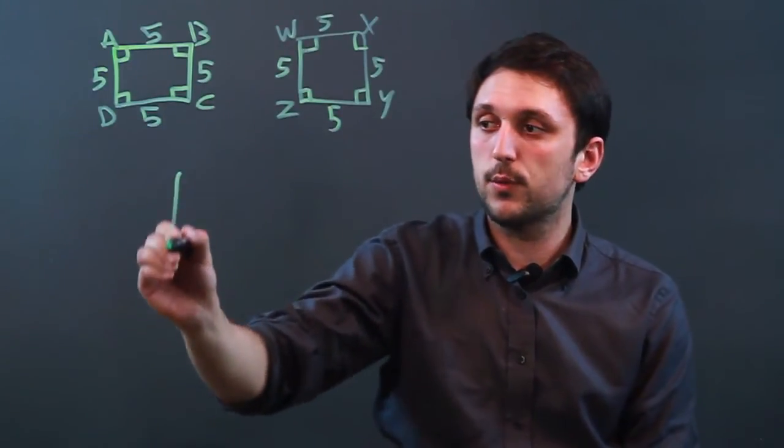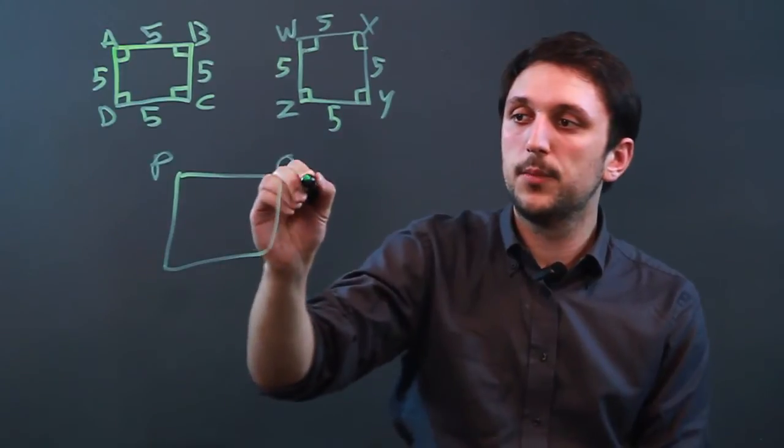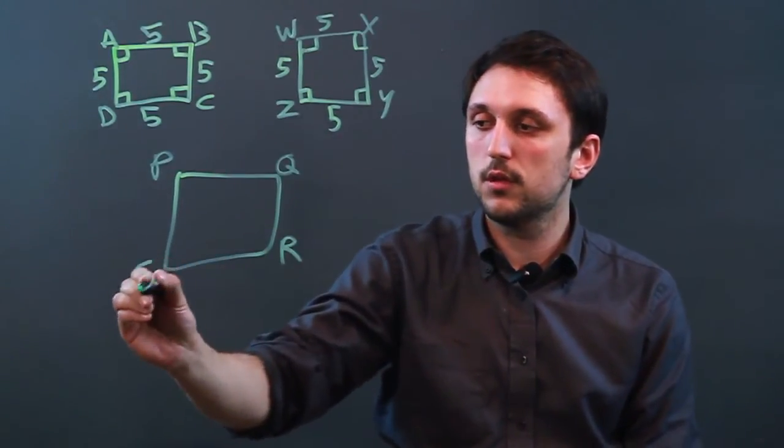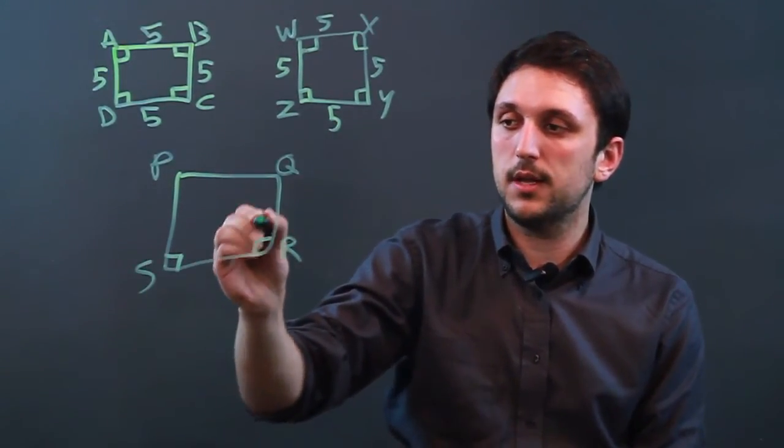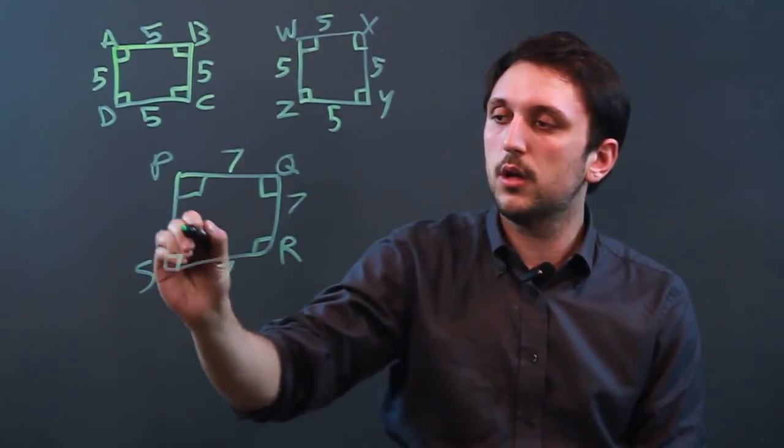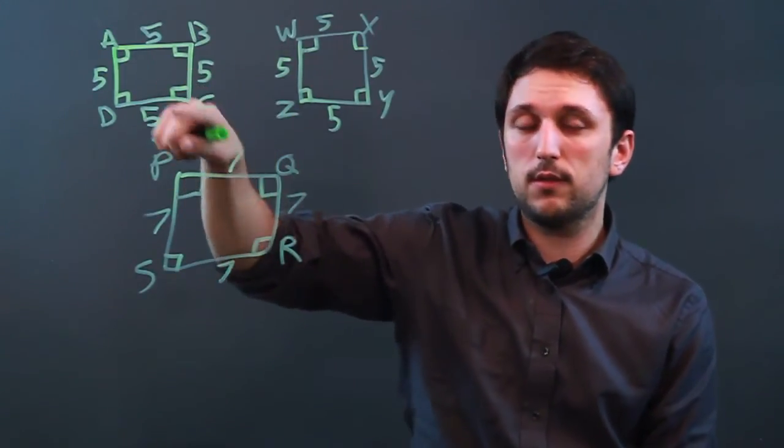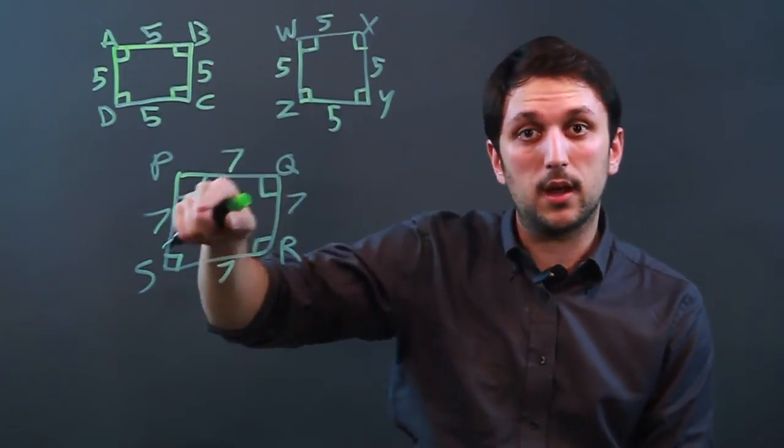Now, if you have another square, for example, square PQRS, all the angles are going to be 90, but let's say all the sides are seven. Well, these two squares are congruent, and all three of these squares are similar but not congruent.